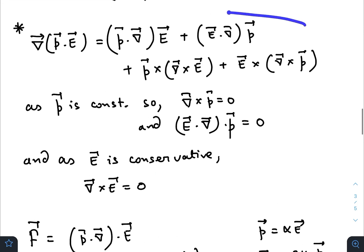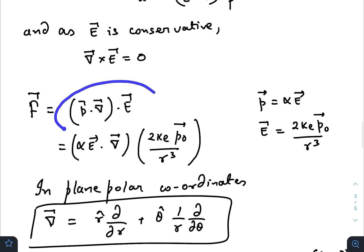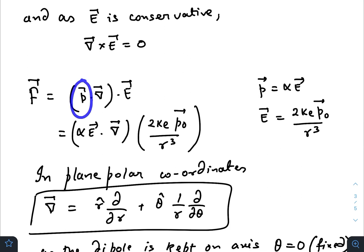So this big formula reduces to this one, where p is the dipole moment of the molecule, that is alpha times E, and what is E vector? E vector is the electric field that is created.